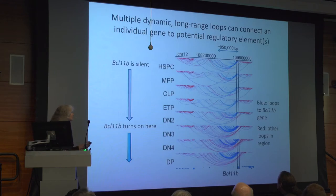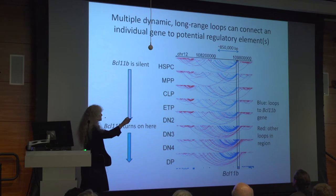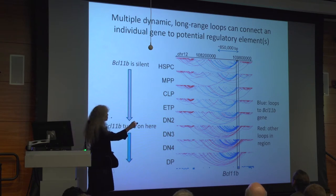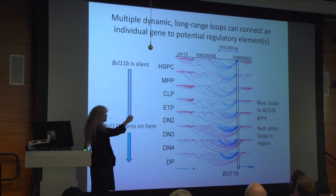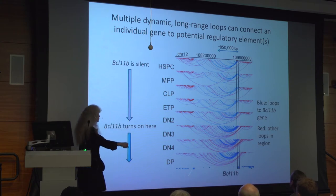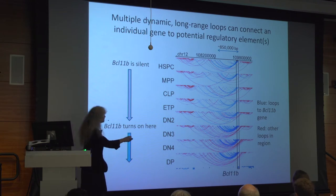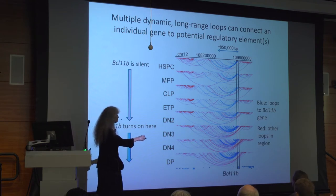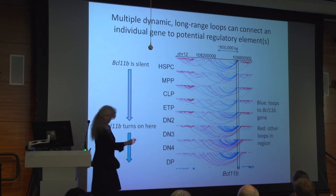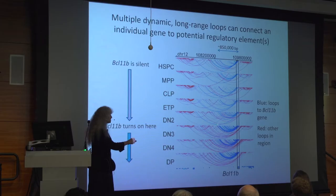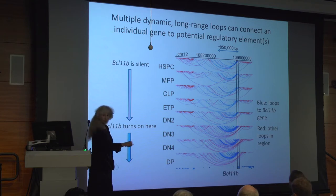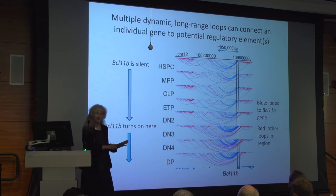Here's a small example again with the BCL11B gene. Here is the distal enhancer — 850,000 base pairs away from the gene. These are loops that are formed as you go from hematopoietic stem and progenitor cells through multipotent precursors to the early stages of T-cell development before BCL11B comes on, and then this is where BCL11B comes on and stays on forever afterwards. There's an increased frequency of loops from the BCL11B locus to this region, but you can see this is 850 kilobases — there's an awful lot of other loops in here, and as the cells go on, there are many, many loops. Even if you just focus on the ones including BCL11B, you've got basically a megabase of loops to consider.